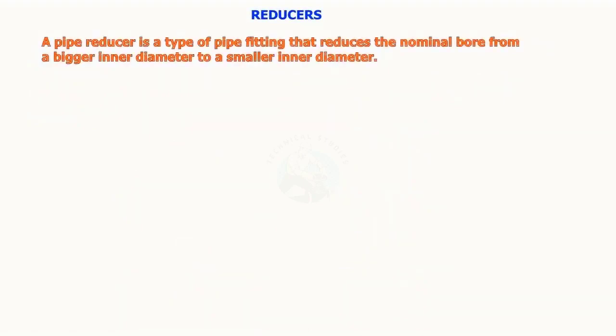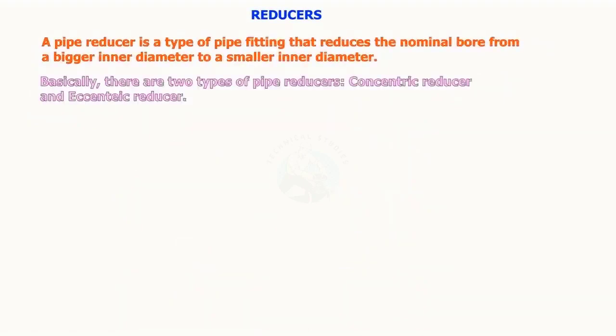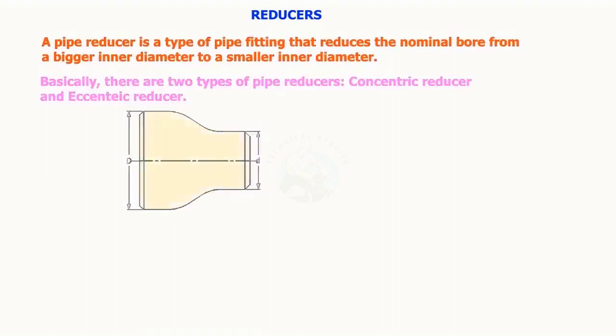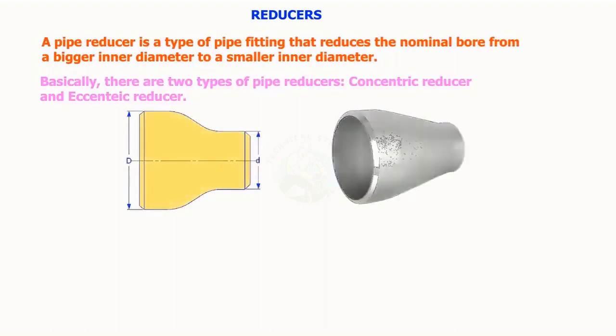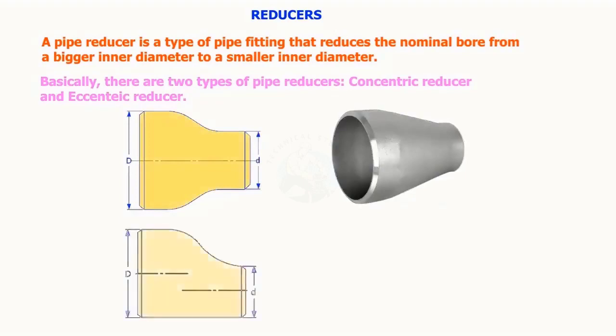A pipe reducer is a type of pipe fitting that reduces the nominal bore from a bigger inner diameter to a smaller inner diameter. Basically, there are two types of pipe reducers: concentric reducer and eccentric reducer.